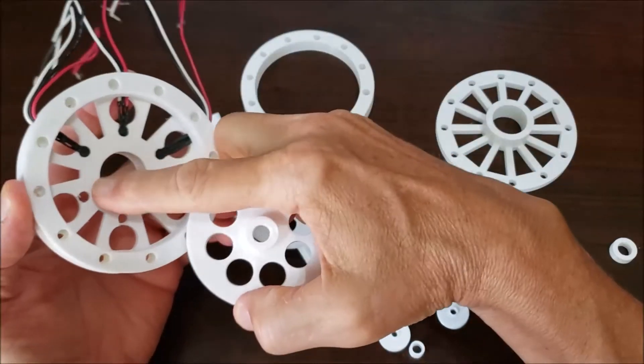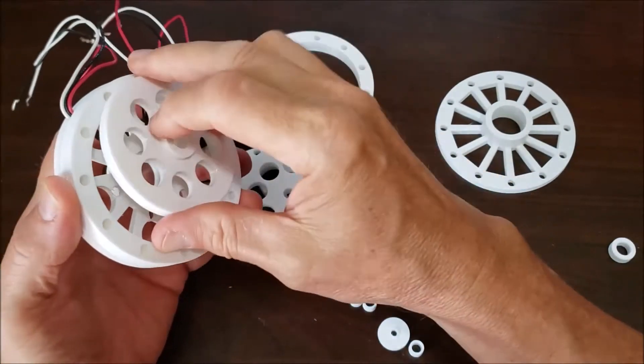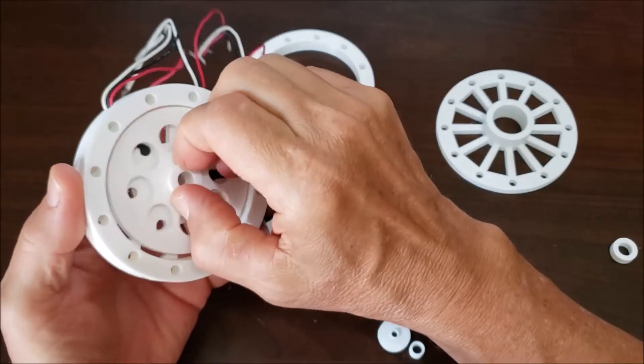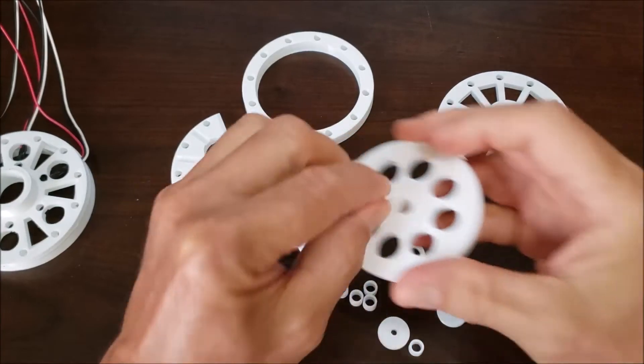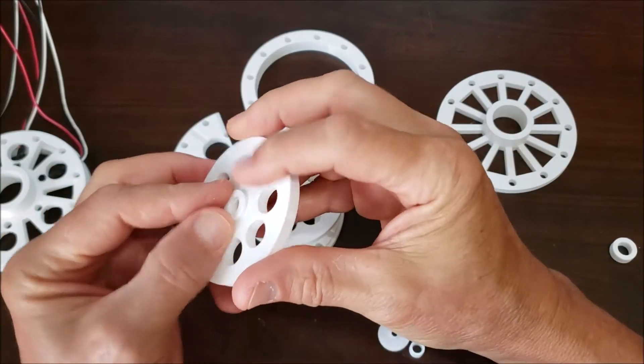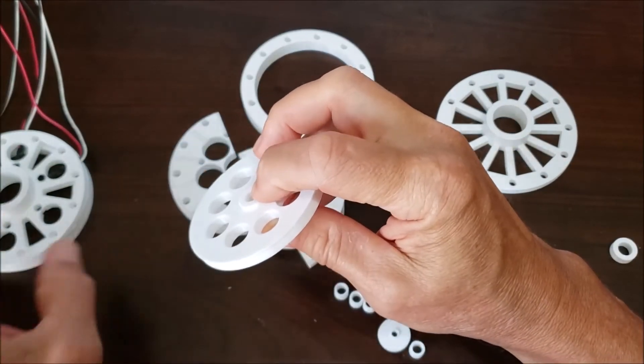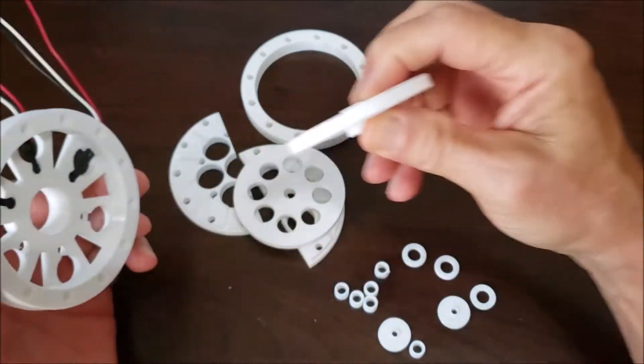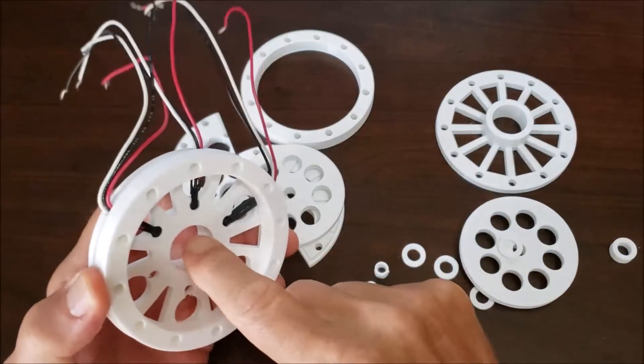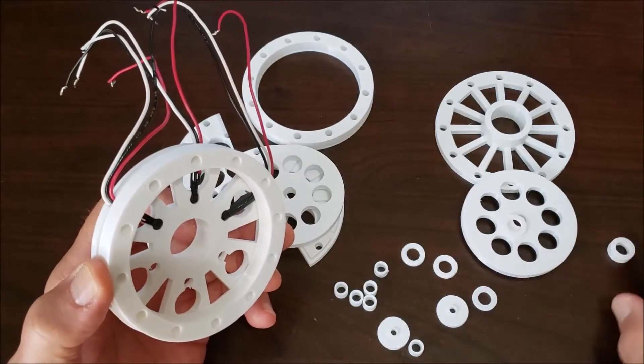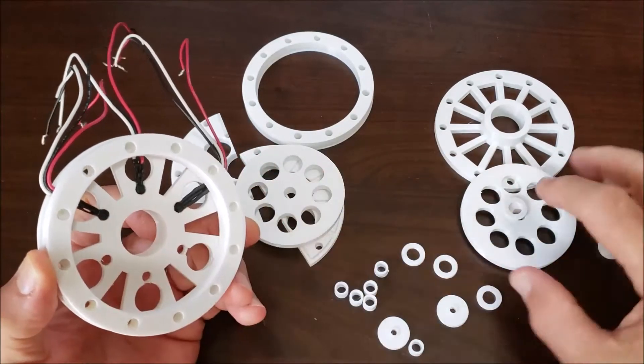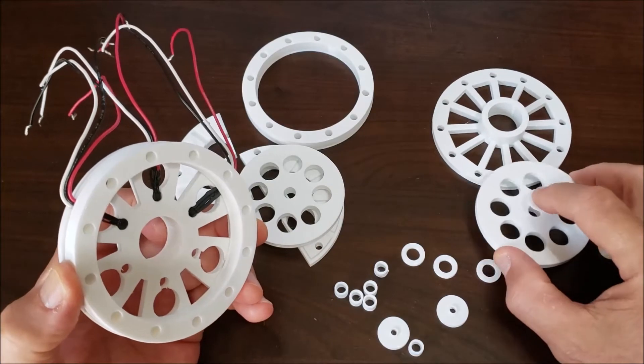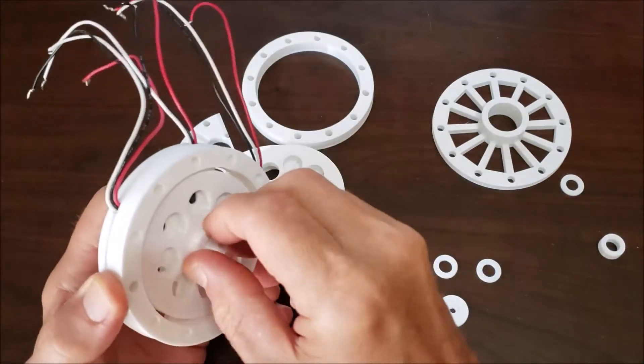You're gonna have the bearing in here flush up against here and you don't want this rubbing, so you need to have a spacer on the back of this to keep it away from the bearing far enough. It depends on how deep your bearing is - you may need a couple of them, you may only need one. The bearing should be flush up against there, that's the point, you don't want it rubbing there.